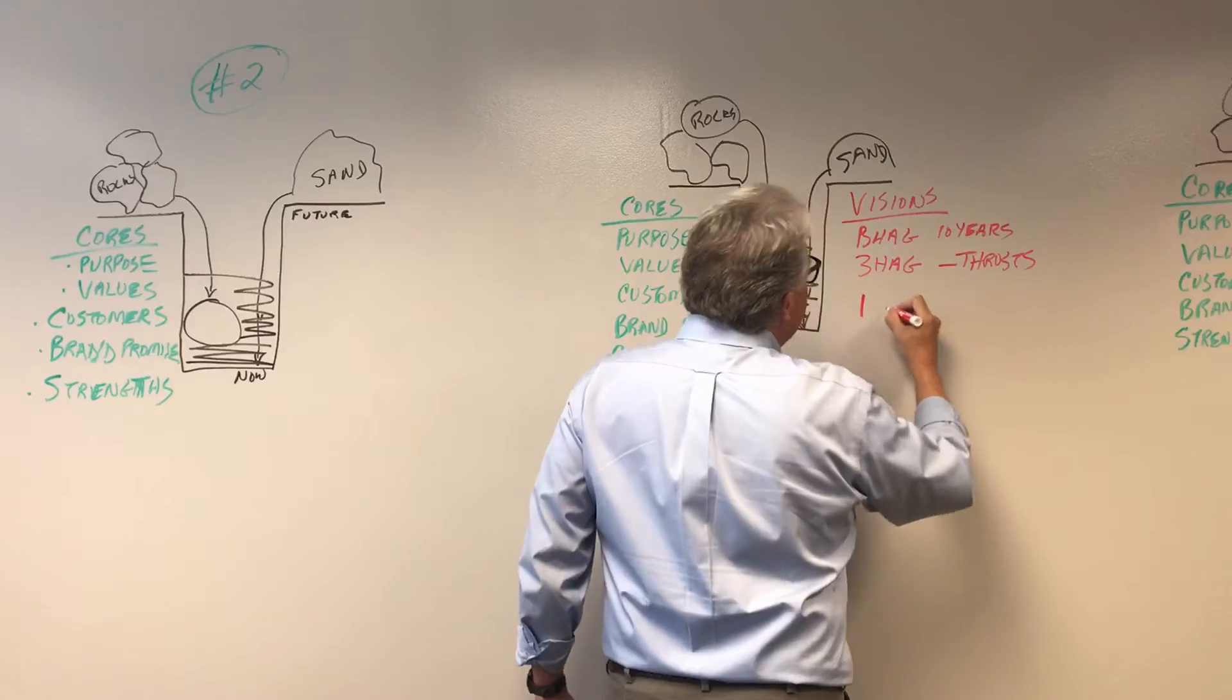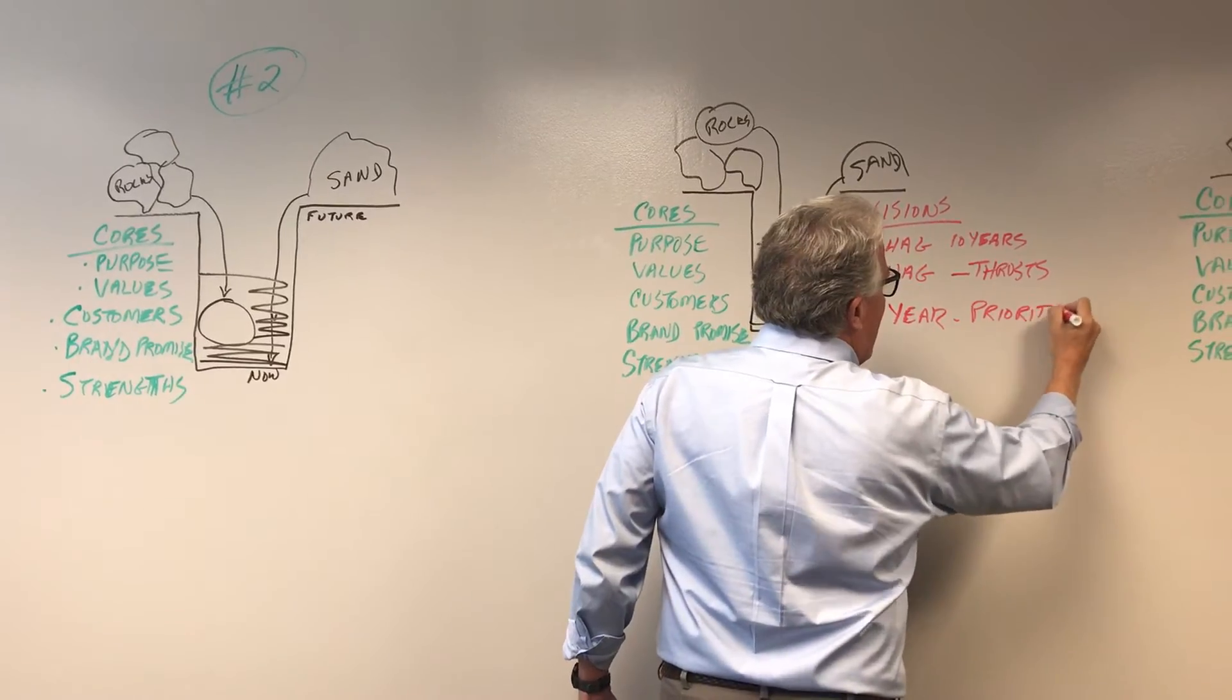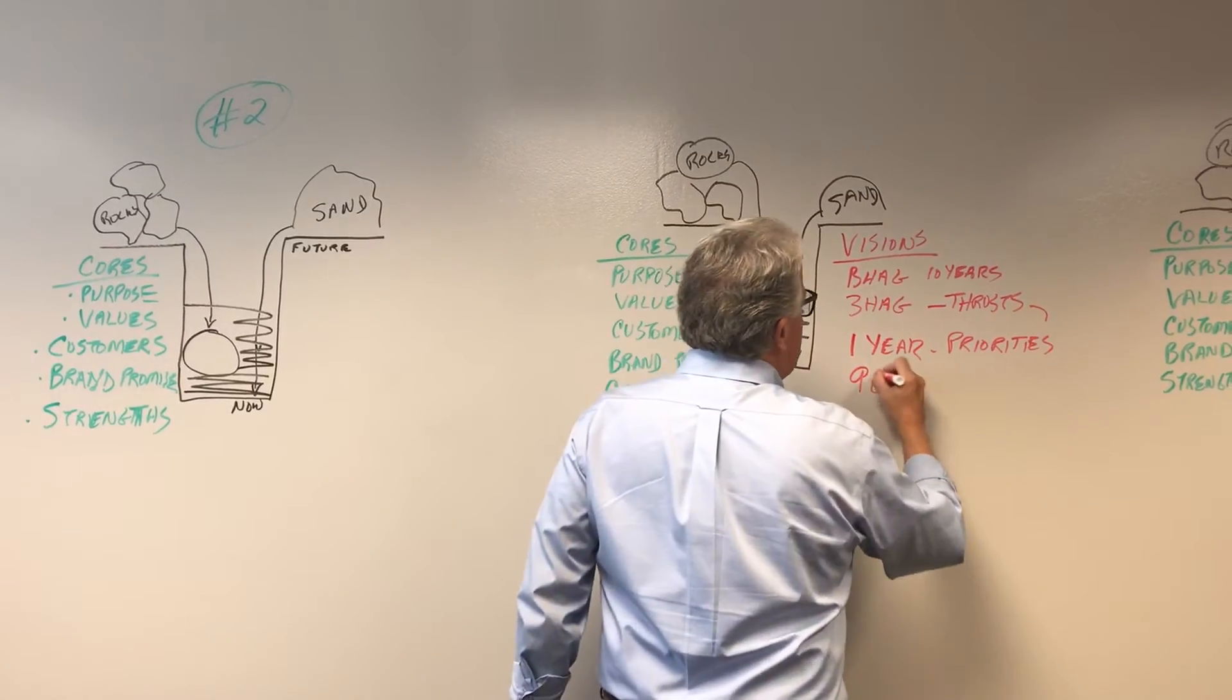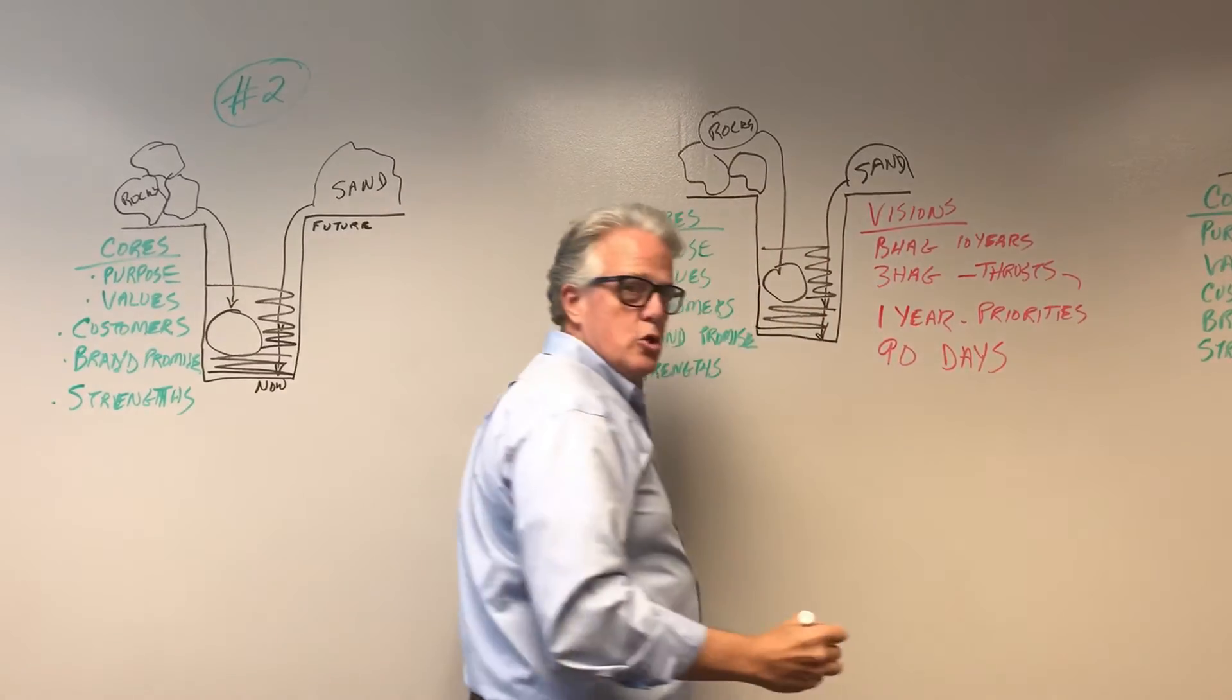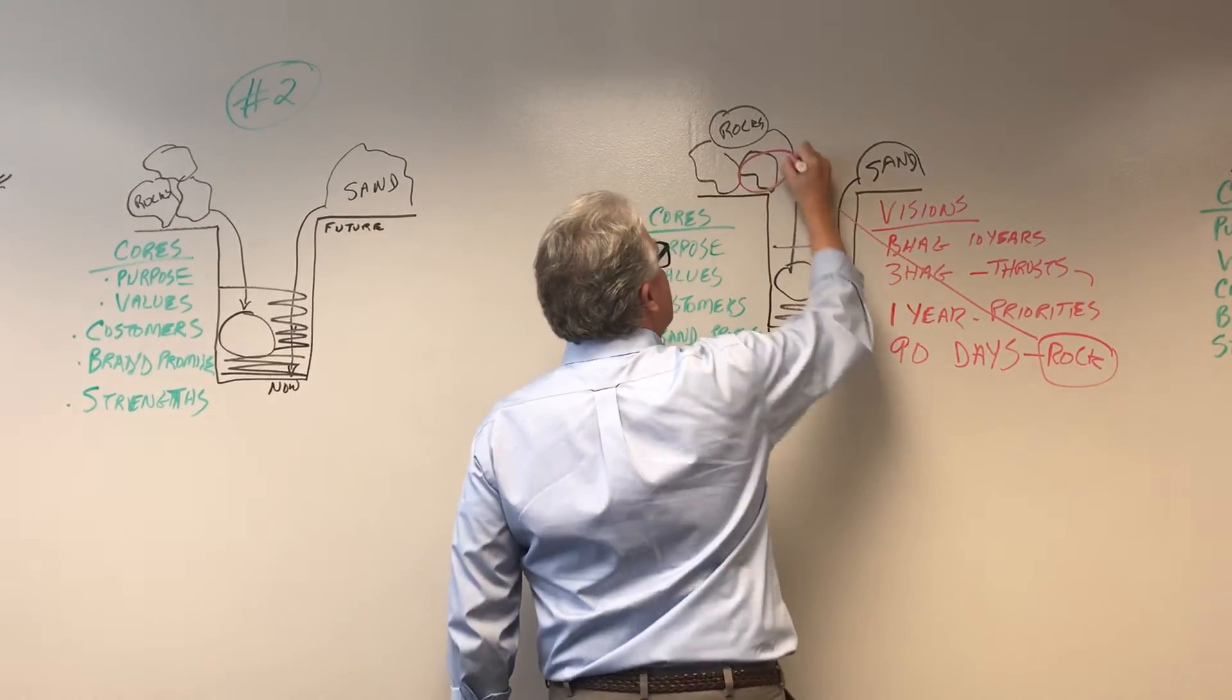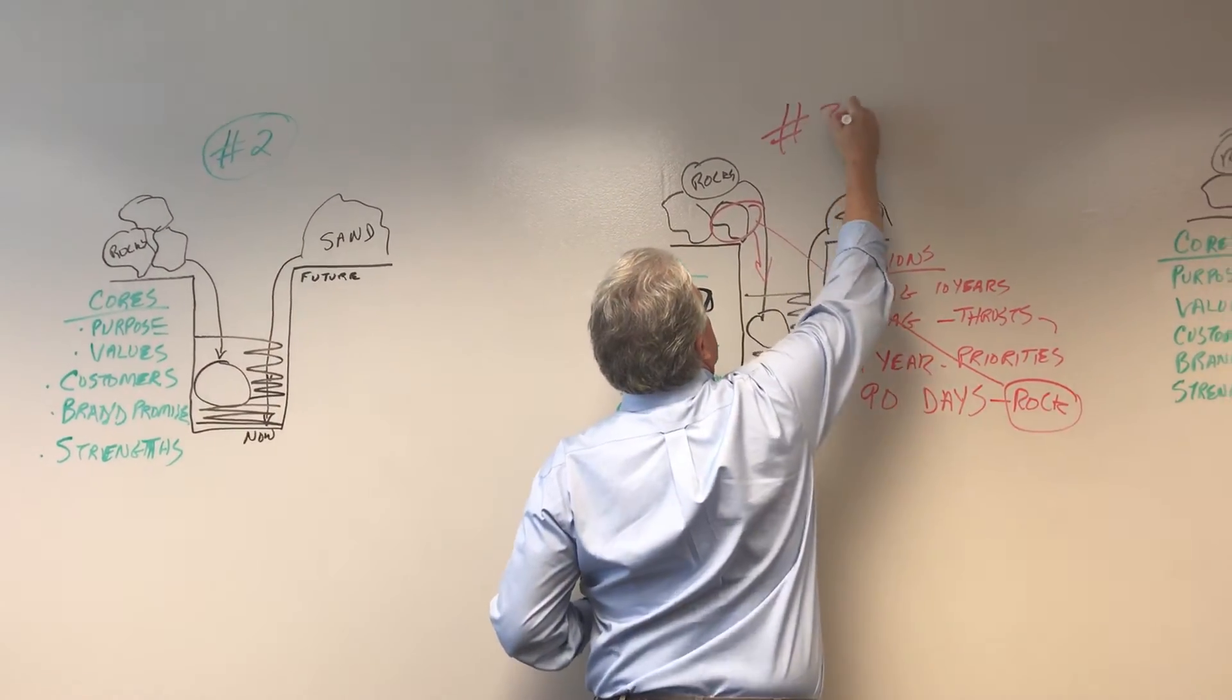Next, you've got to come back to the year right in front of you, one year out and set priorities on how to get the thrusts accomplished. And finally, you've got to sit down and say there's 90 days. What's the next 90 days going to look like? And that is how you select the rock. And that rock goes into the hole. That's step number three.